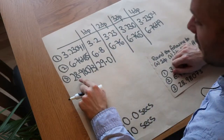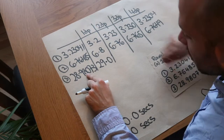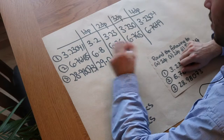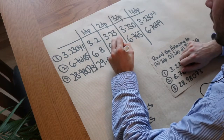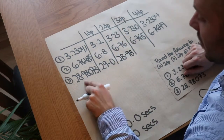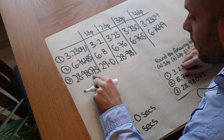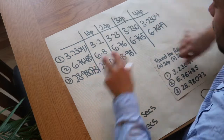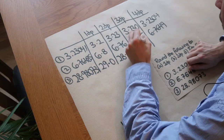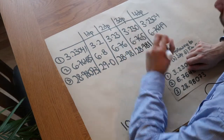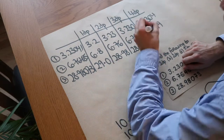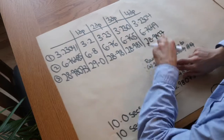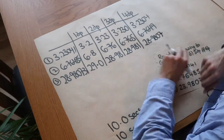For 28.98073 to two decimal places: we have 28.98 and check the next digit. Is it greater or equal to five? No, so the eight stays as it is — 28.98. For three decimal places: one, two, three — check the next digit. Is it greater or equal to five? Yes, so that zero goes up to one, giving 28.981. For four decimal places, it's just 28.9807, and the seven does not go up because three is less than five.